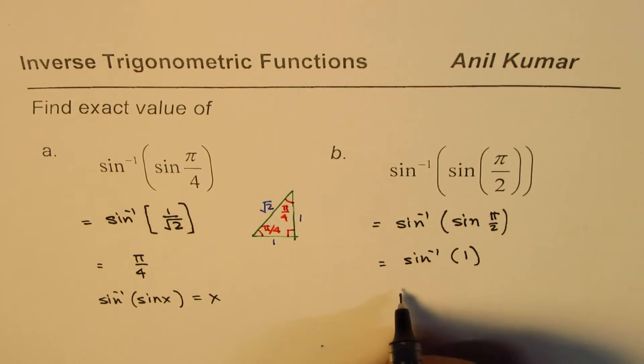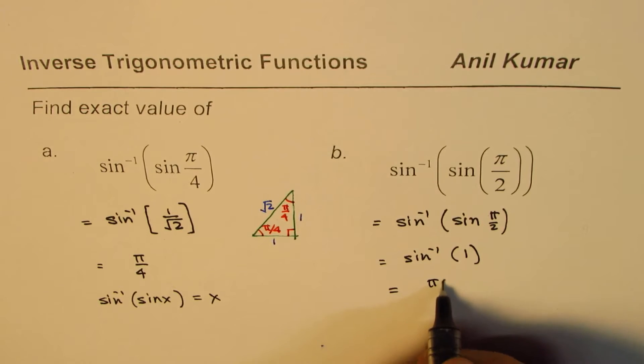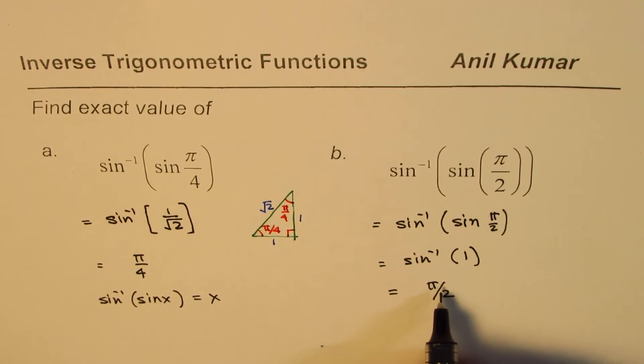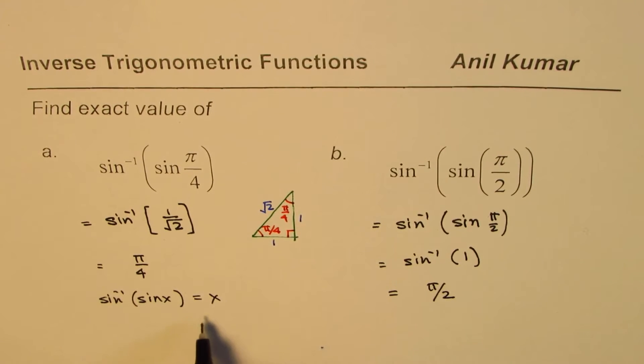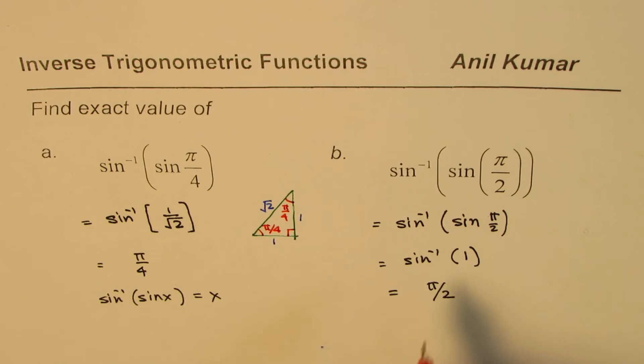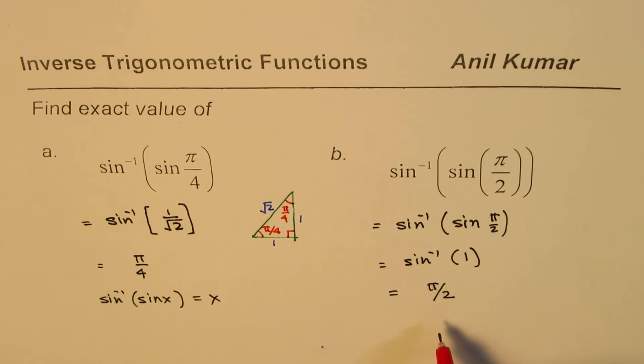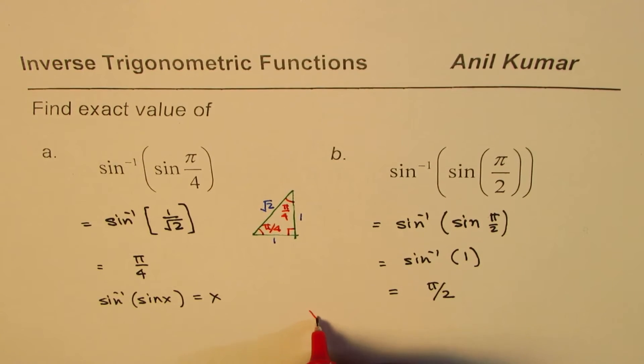Sine inverse of 1 is pi by 2, correct. So again what we get is sine inverse of sine x is equal to x. Now it is important to note that you'll only get this result provided x is between minus pi by 2 to pi by 2.